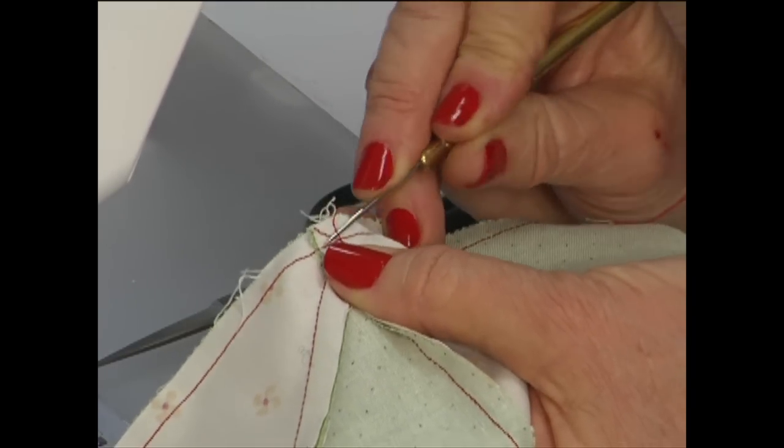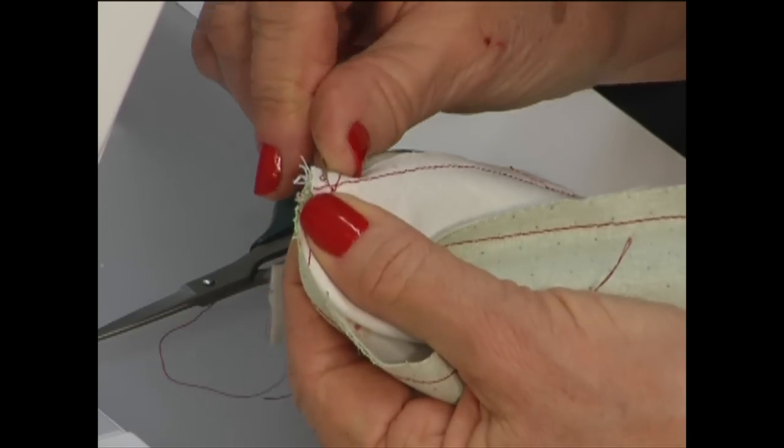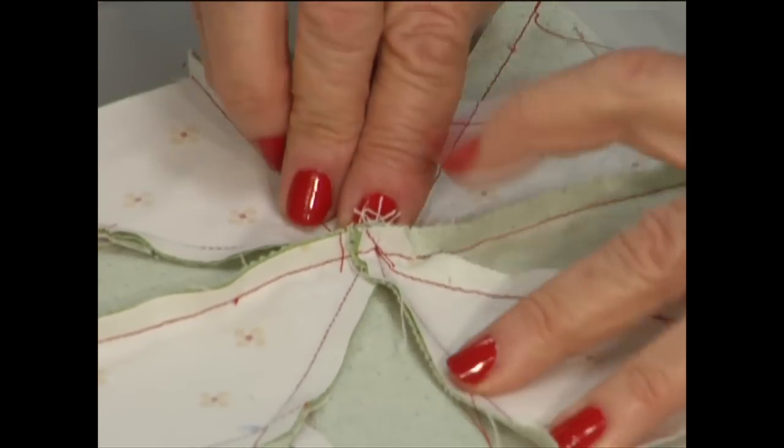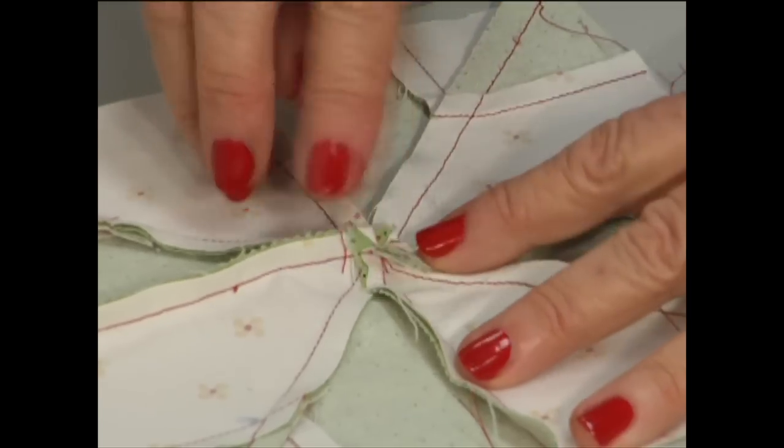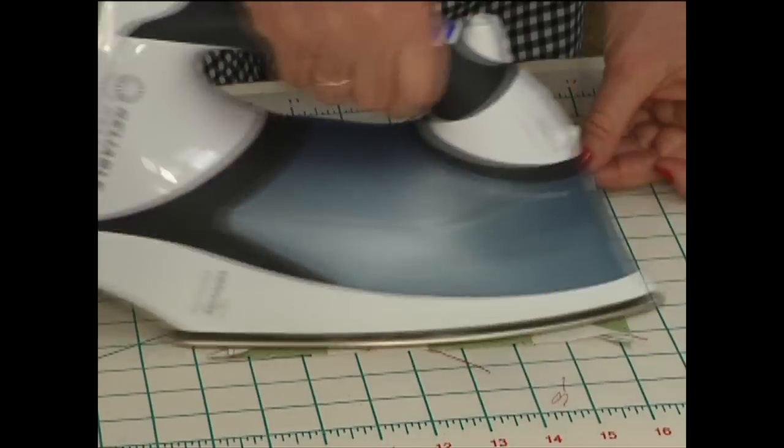Lay your block flat, mush that center good, and then you can just swirl those seams around the center. It looks perfect on the right side, and when you flip it over, there you see that little pinwheel on the block.